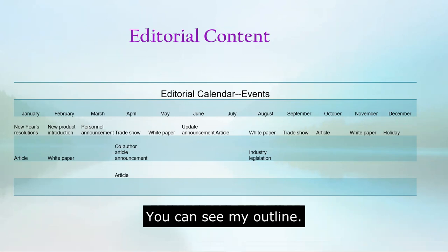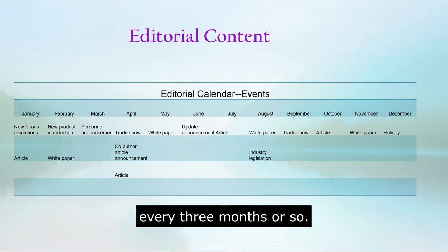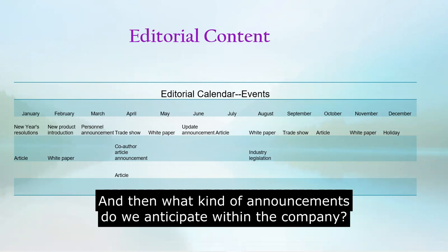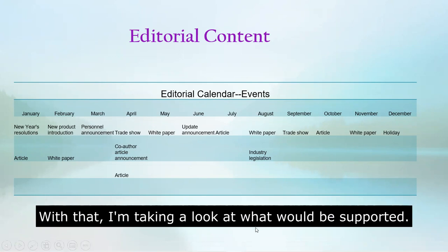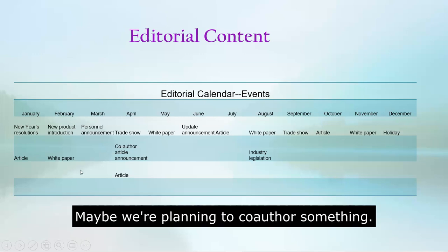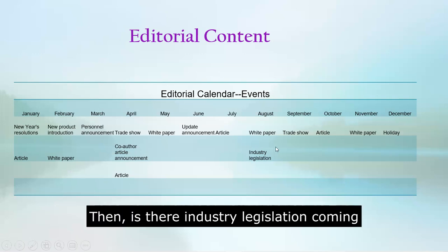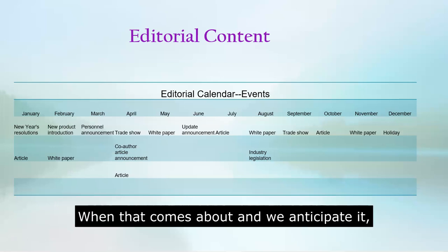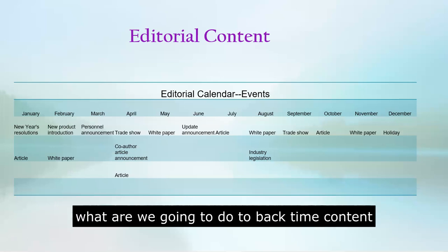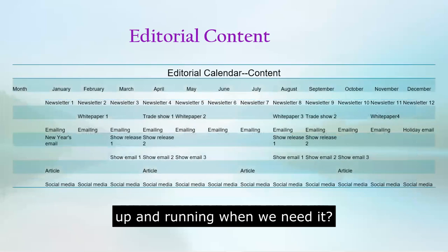In this case, you can see I've outlined maybe we plan to do something where we deliver a white paper every three months or so. And then what kind of announcements do we anticipate within the company and what holidays might affect our company? Maybe we're planning to co-author something — what's the deadline for that and can we back-time it? Is there industry legislation that affects our industry? When that comes about and we anticipate it, what are we going to do to back-time our content so that we can have everything ready to go and up and running when we need it?